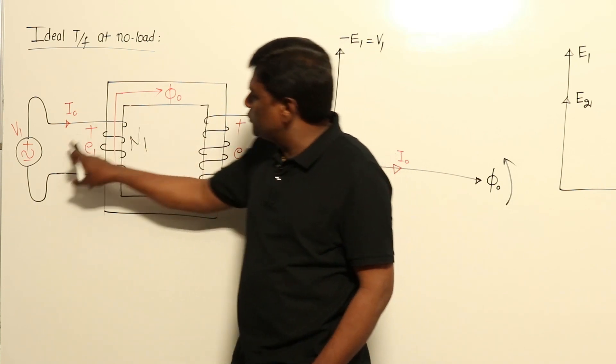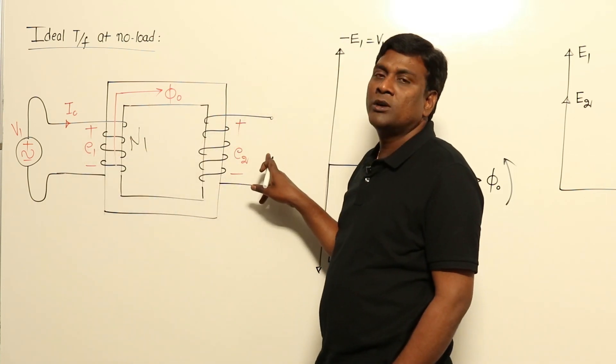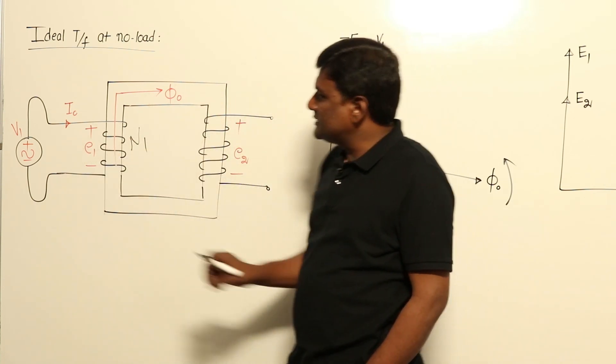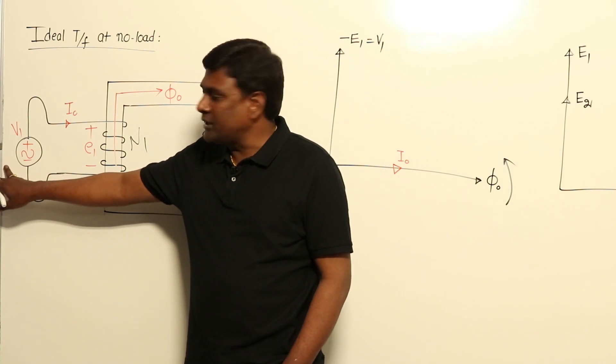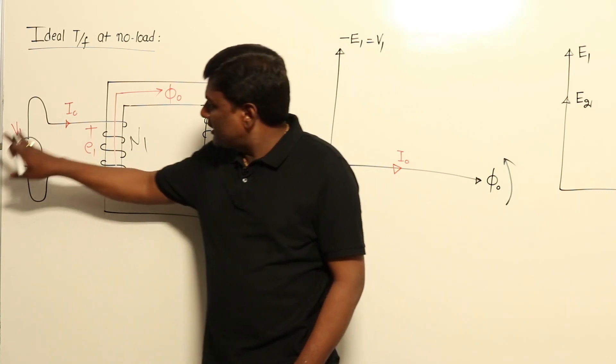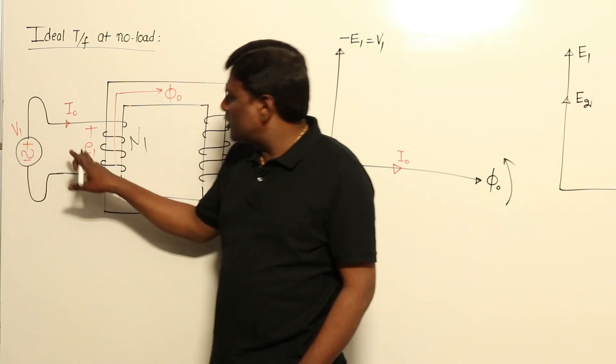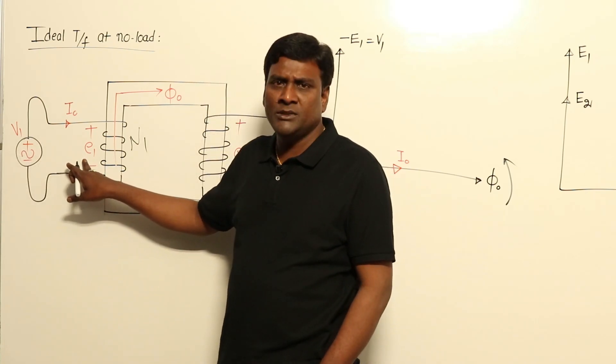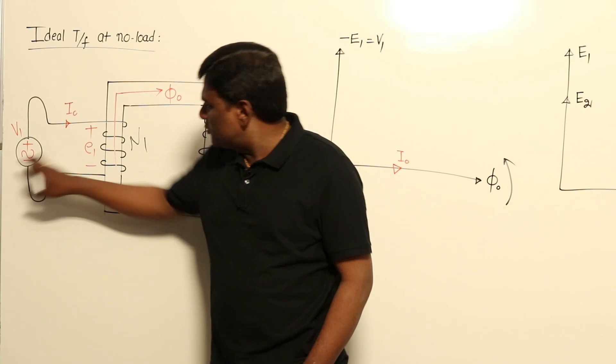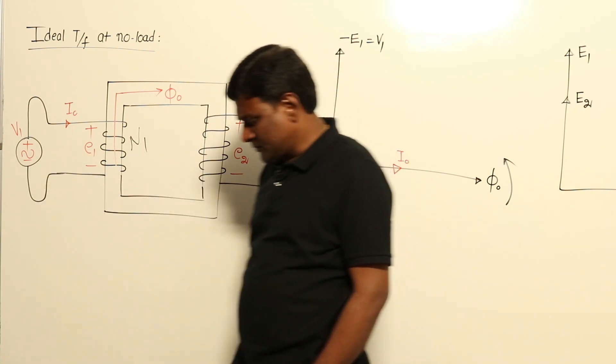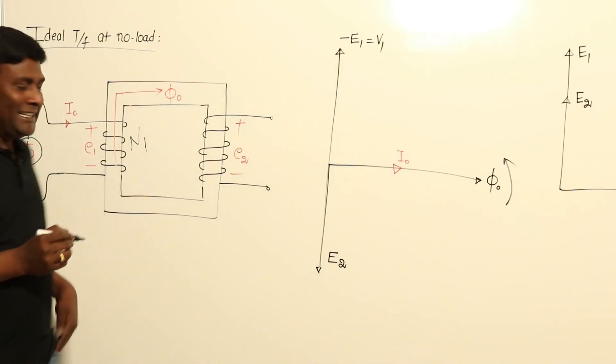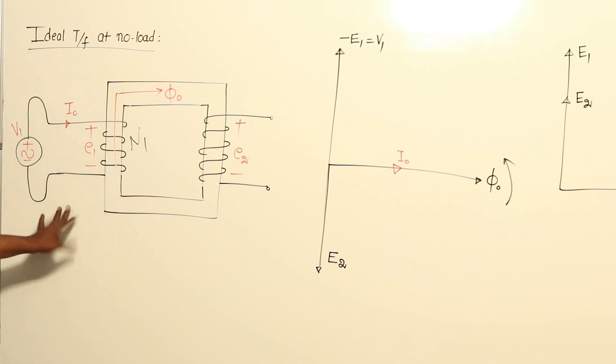This flux will produce E1 and E2 sinusoidal voltages, such that if V1 is sinusoid voltage, automatically E1 should be sinusoidal voltage. For example, V1 is 100 volts, automatically E1 also should be 100 volts RMS because almost these two are connected in parallel only. Now let me derive an equation for this.